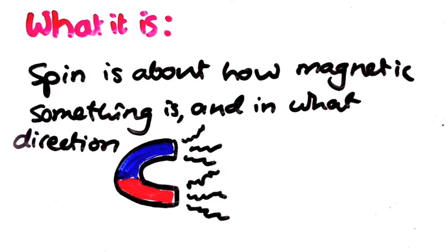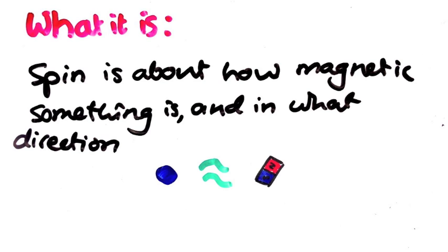The problem with this statement is that it makes particles seem like they act like tiny little bar magnets. Actually they don't, because as we'll see, spin is a very strange thing. Let's just get to those experimental facts and we will return to this point later.